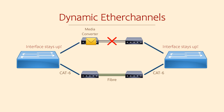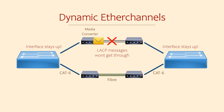However, LACP regularly sends messages between our switches. If there's a fault in the media converters or the cables between them, the LACP messages won't get through. When these messages go missing, the switches will know there's a problem and can take action — such as alerting you or shutting down the faulty link — allowing regular traffic to flow over the good link.